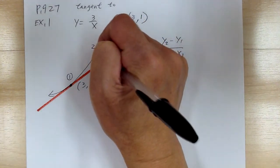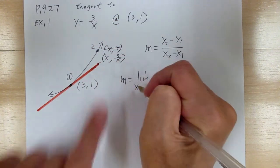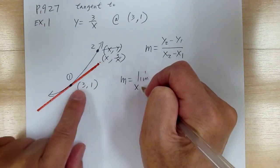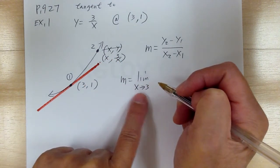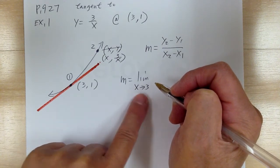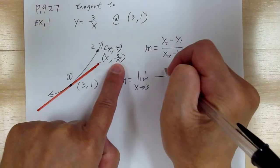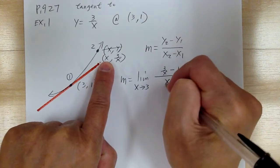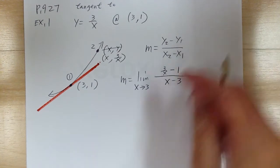You want to bring point 2 closer and closer to point 1, making x2 approach x1, which is 3. The y2 is 3 over x, y1 is 1, x2 is x, and x1 is 3. So you cannot substitute 3 directly.